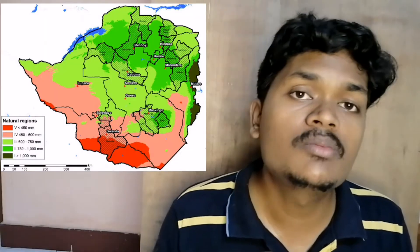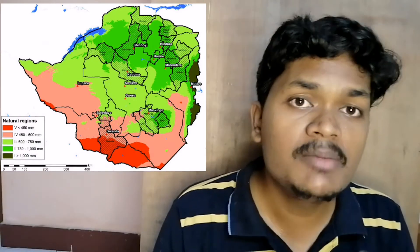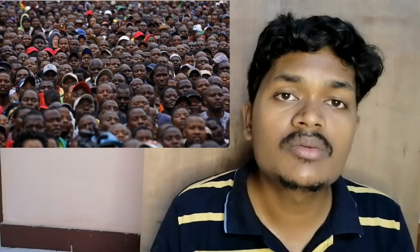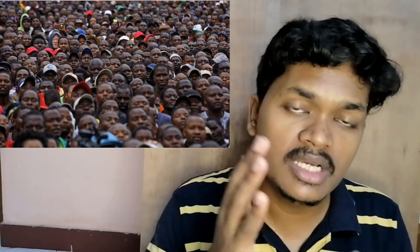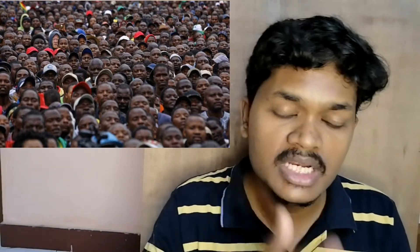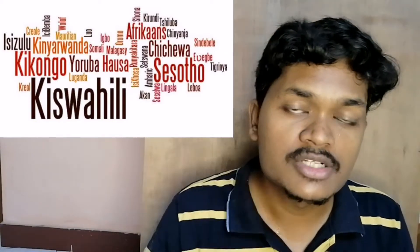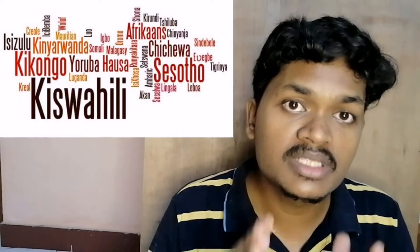Now let's talk about this country. Zimbabwe is 3.9 lakh square kilometers in area. It has forests and many trees. This country has a large population, of which only 10% belong to other groups — the Shona tribes are the majority. There are 16 official languages in this country.